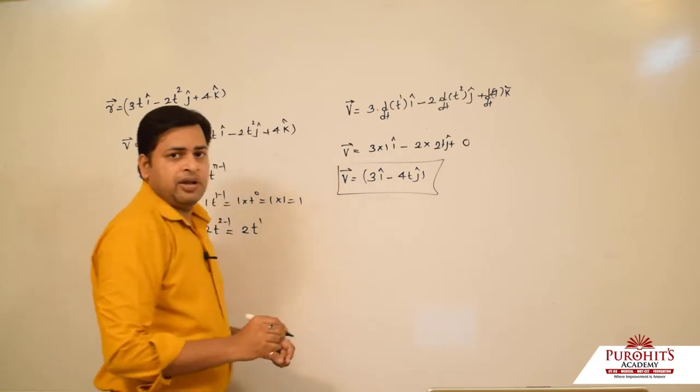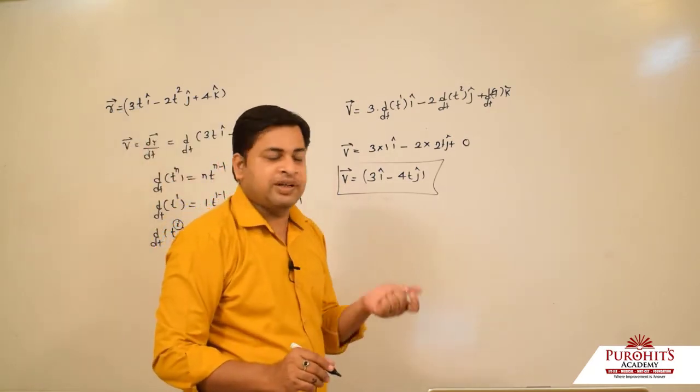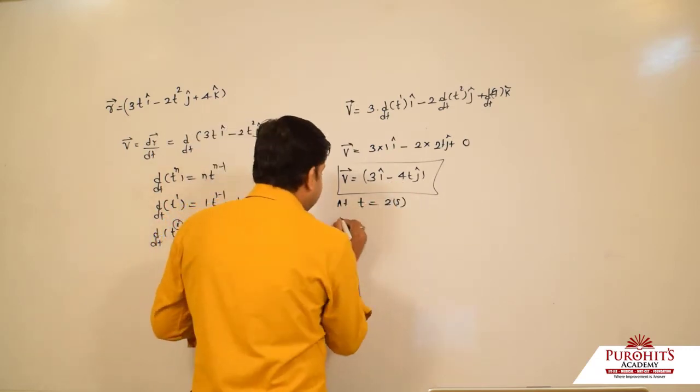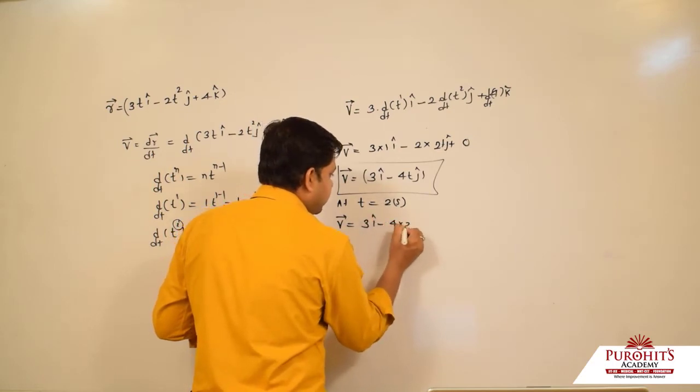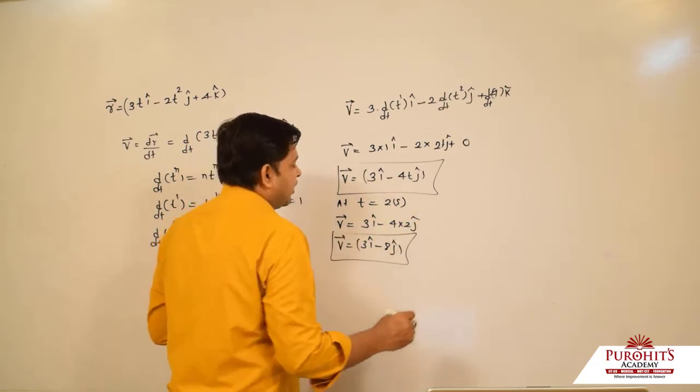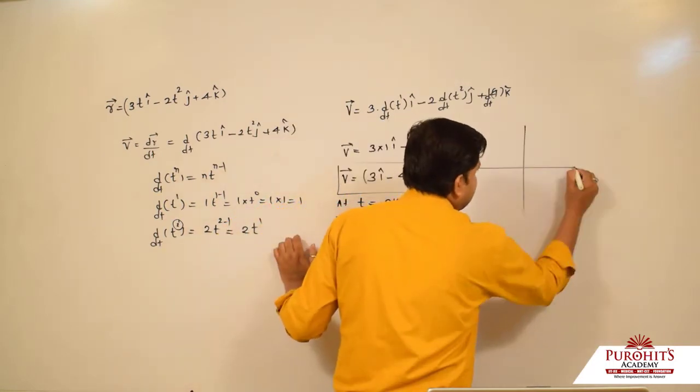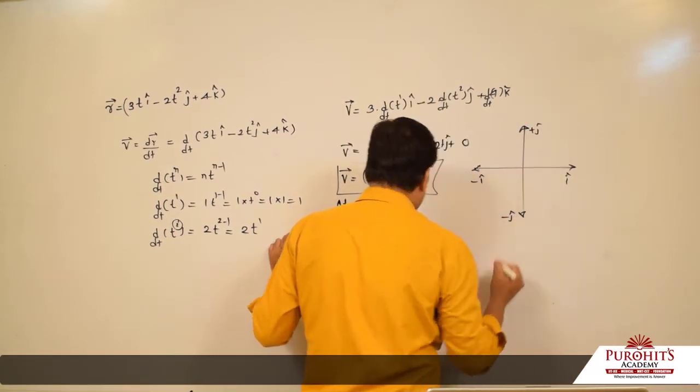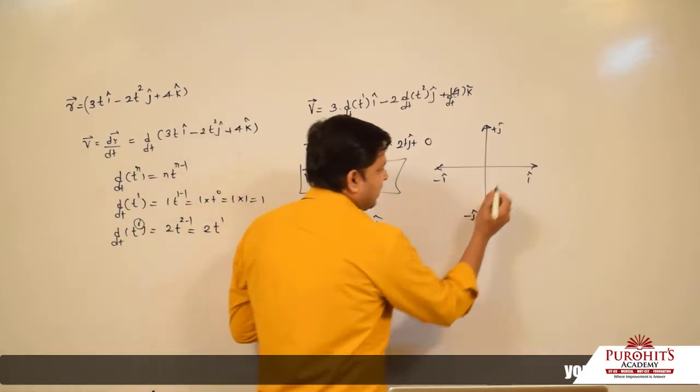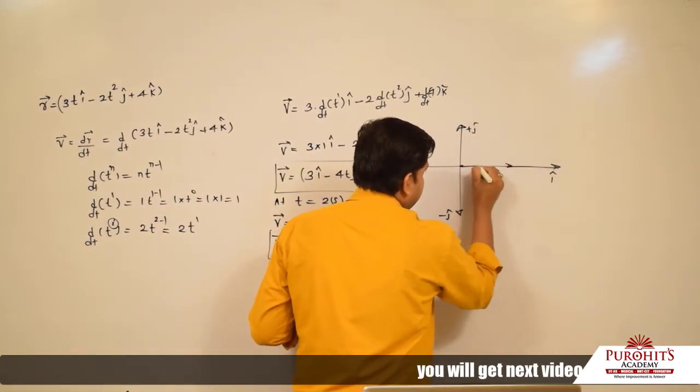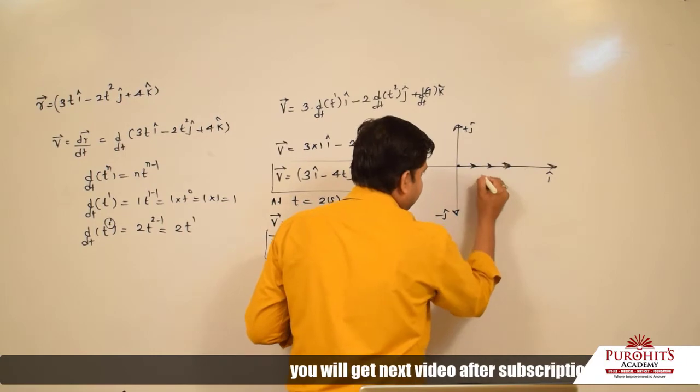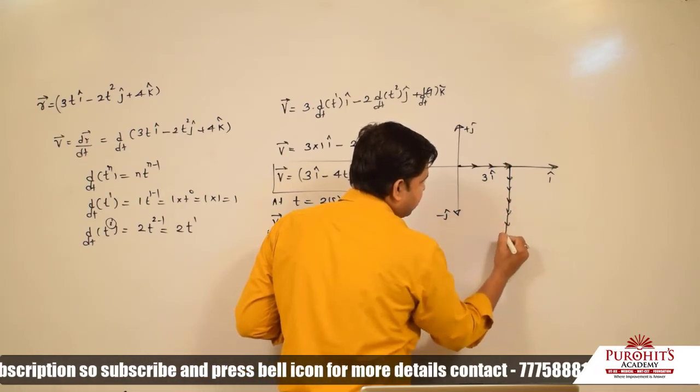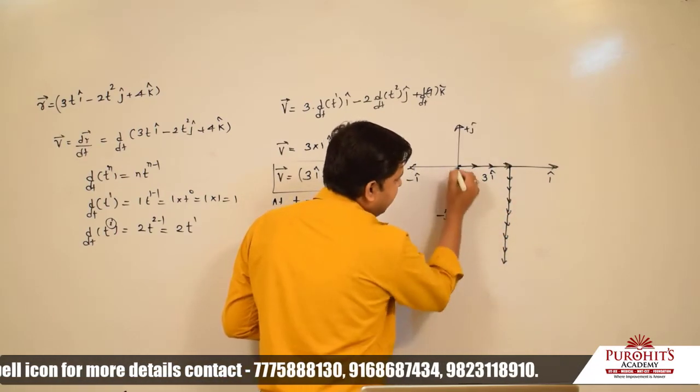Now at time t = 2 seconds, velocity will become 3 î - 4·2 ĵ = 3 î - 8 ĵ. If we draw the direction: 3 steps in positive i direction, and 8 in negative j direction. Starting here and ending, joined by a straight line.